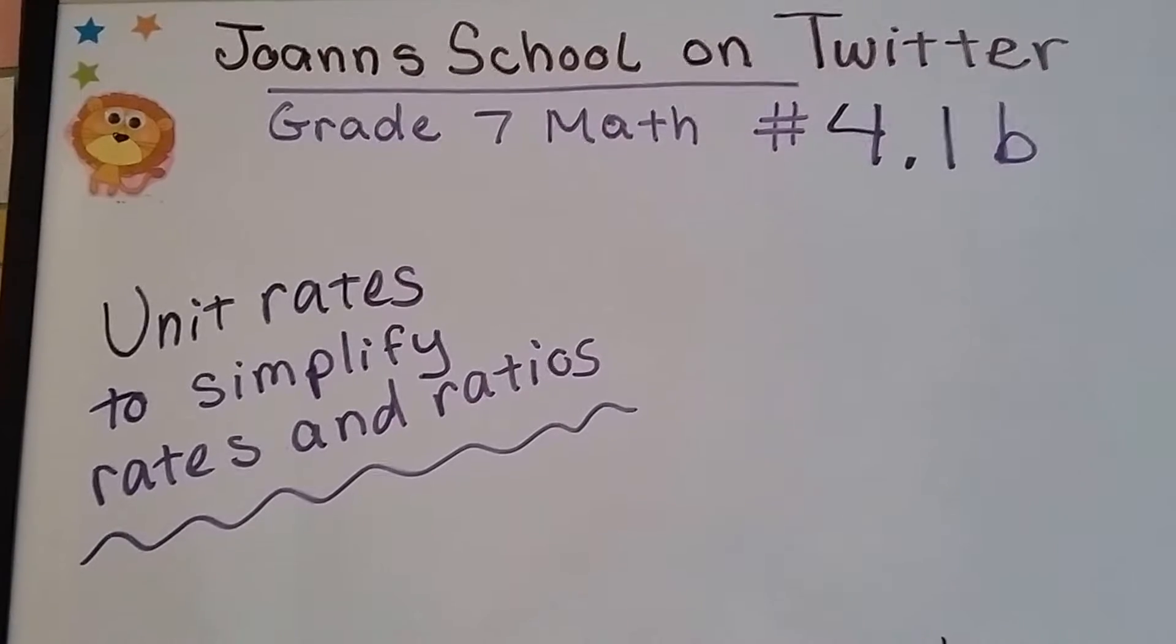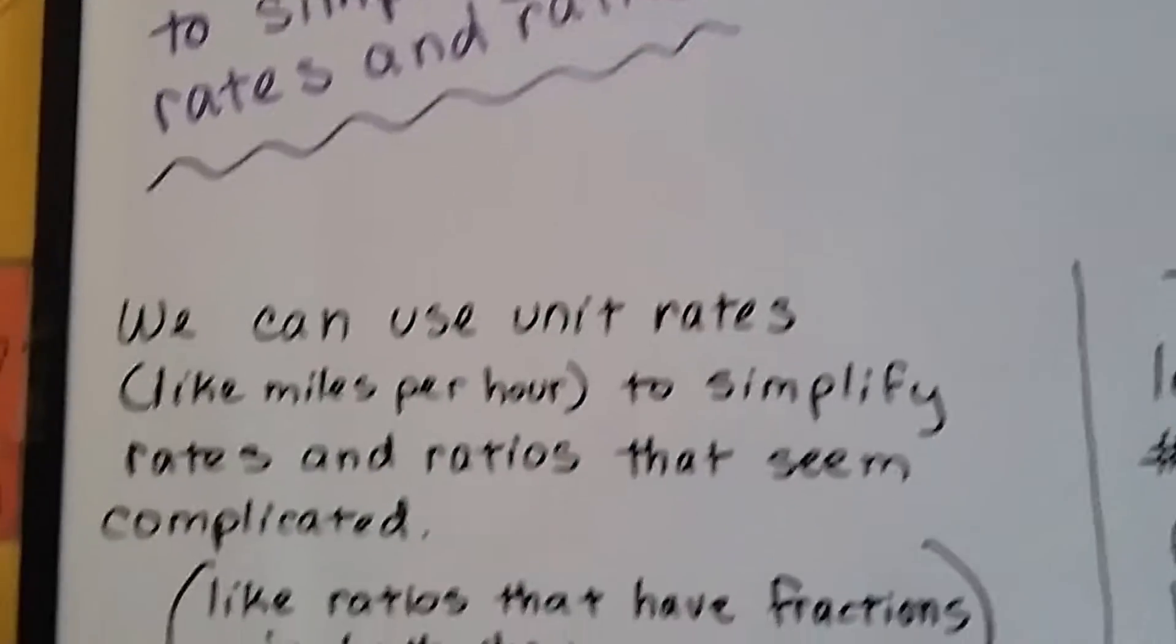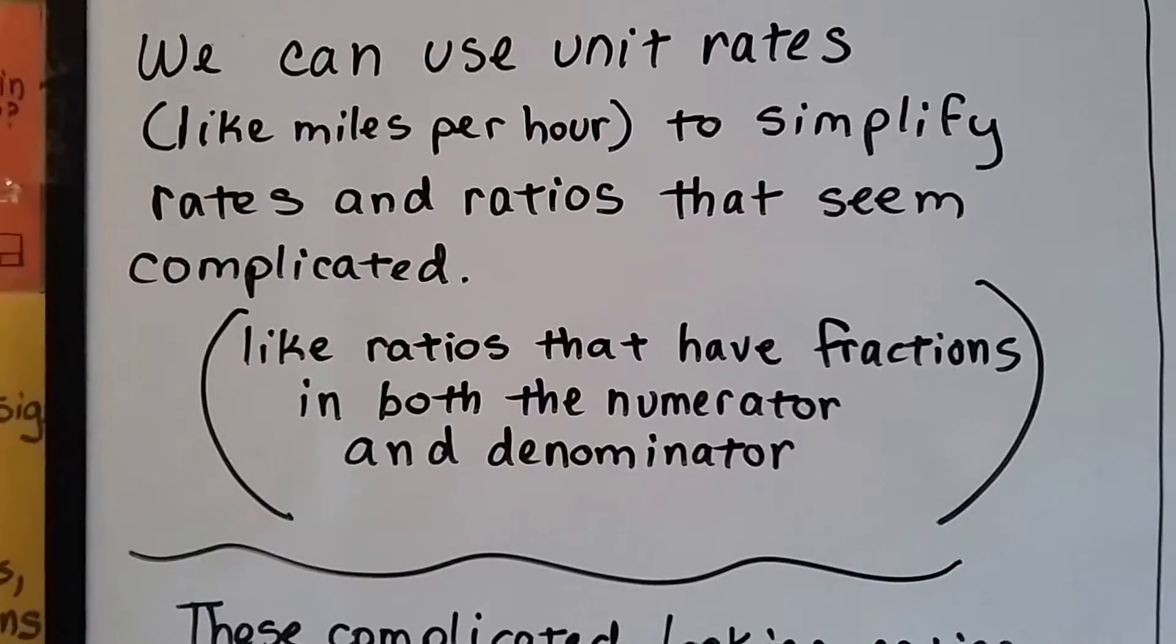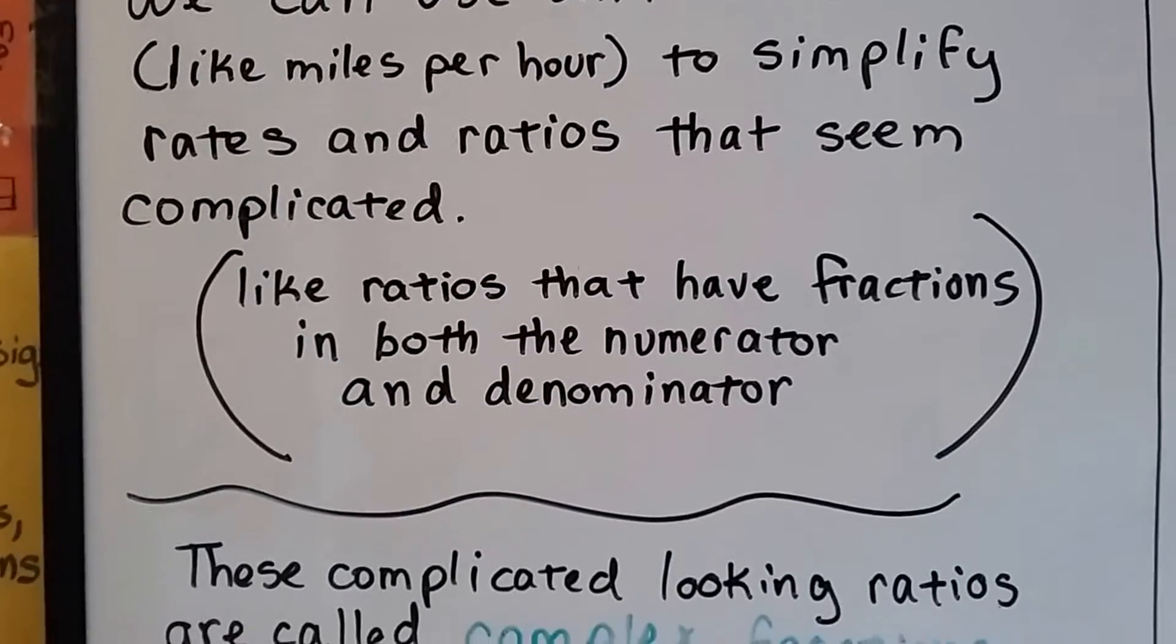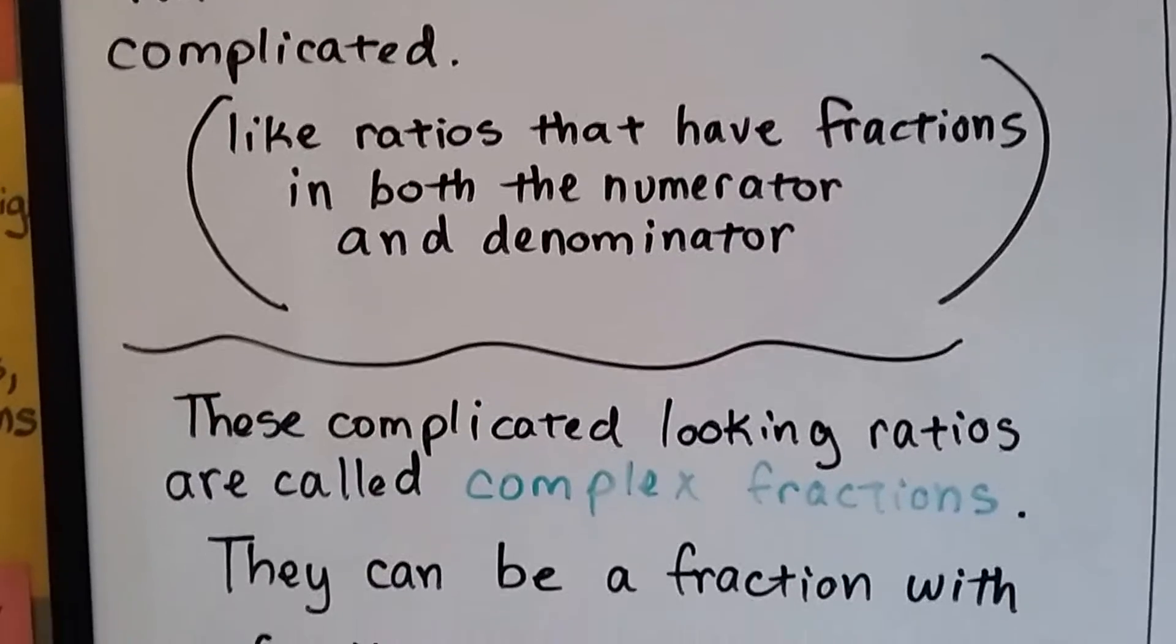Grade 7 math number 4.1b, Unit Rates to Simplify Rates and Ratios. We can use unit rates, like miles per hour, to simplify rates and ratios that seem complicated, like ratios that have fractions in both the numerator and denominator.